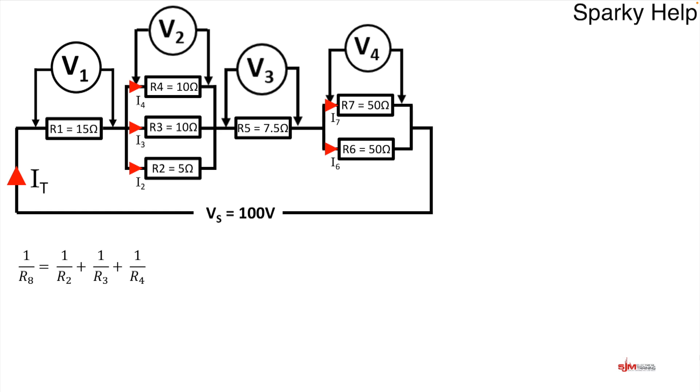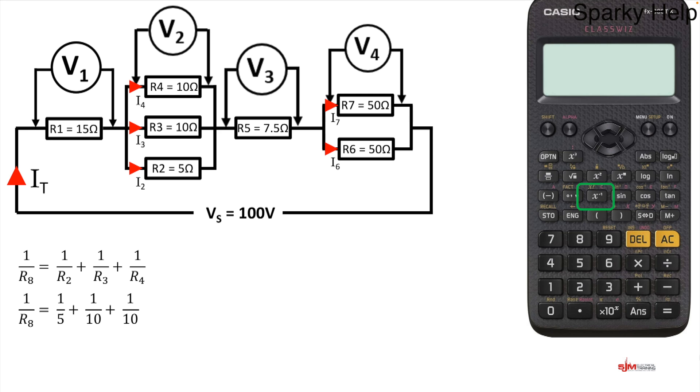We're going to look at this first branch here of parallel and it's a parallel calculation so it's one over R2 plus one over R3 and one over R4. If we put those figures in into our calculator remember the button we're going to press is the X to the minus one. You could use the fraction button but remember to put your final answer as a one over as well. We're going to press the X to the minus one after each step.